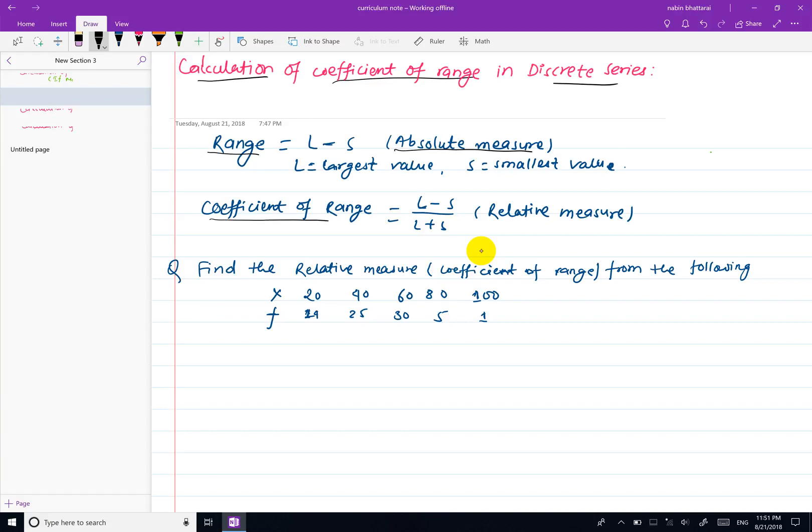The coefficient of range is the relative measurement. This is the formula: (L minus S) divided by (L plus S).